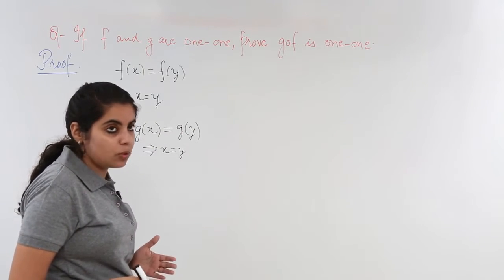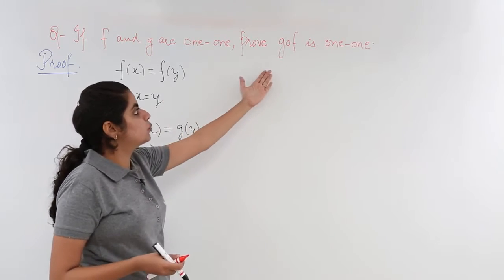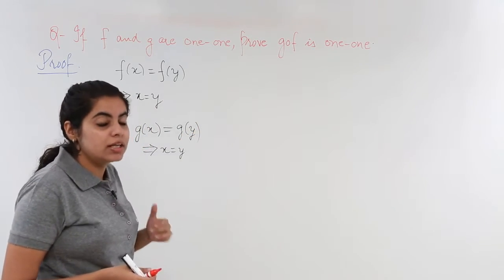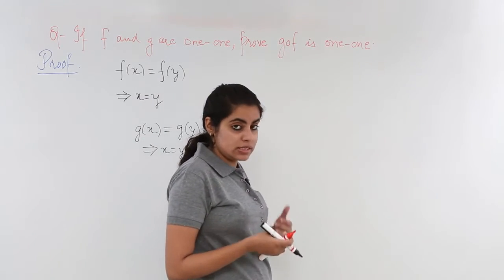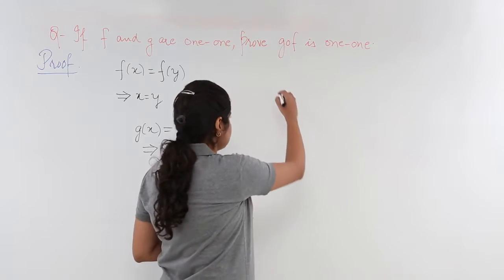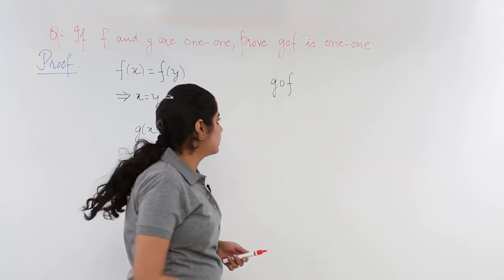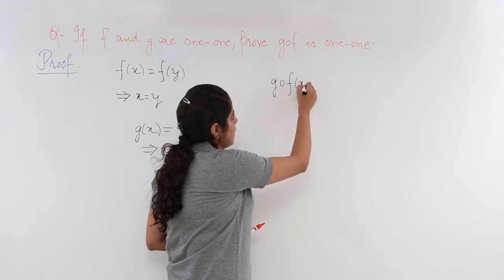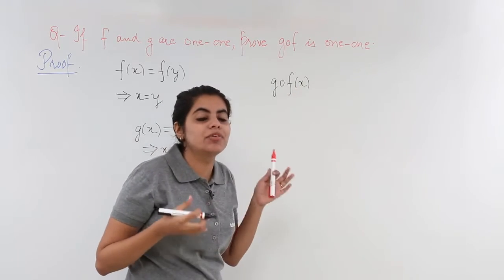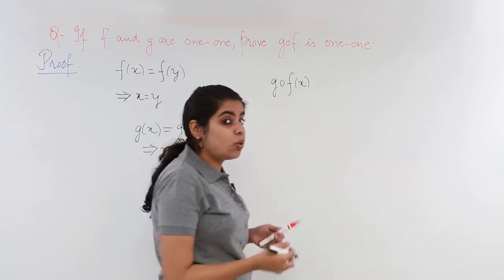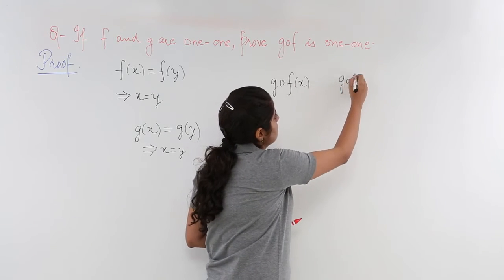Now what do we have to prove? We have to prove that gof is one-one. So we move a step forward. We start solving for gof. Now what is gof basically? gof is nothing but gof(x) when we consider the variable x, and it is gof(y) when we consider the variable y.